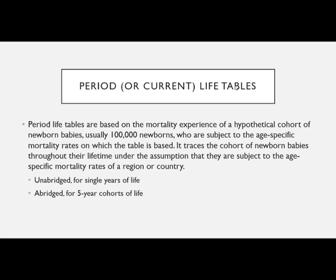Period or current life tables — those are synonymous — are based on the mortality experience of a hypothetical cohort. So these aren't real people. This is a hypothetical cohort of newborn babies, usually 100,000 newborns, who are subject to the age-specific mortality rates on which the table is based. It traces that cohort throughout their lifetime under the assumption that they are subject to the age-specific mortality rates of a region or country, such as Texas or California, and they are also broken down by race, ethnicity, and gender.